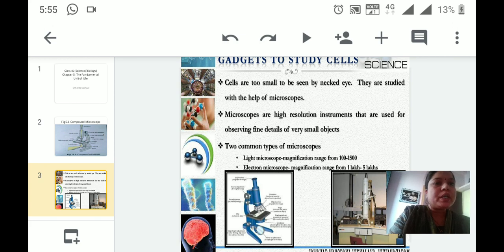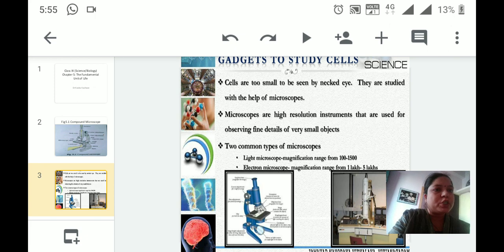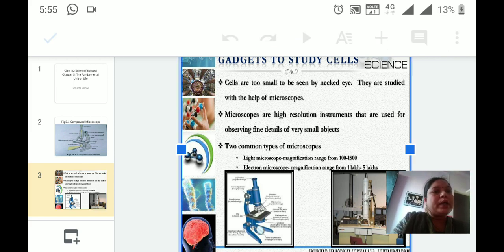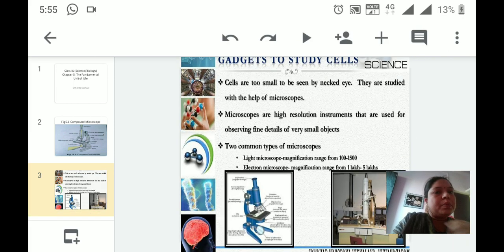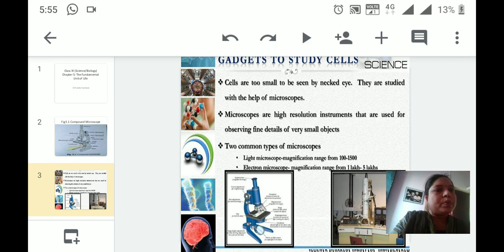And for that reason, we use the compound microscope to observe cells. Microscopes are high-resolution instruments that we can utilize to observe these very small, microscopic objectives. Many types of microscopes are there, including compound microscope, compound light microscope, and electron microscope.